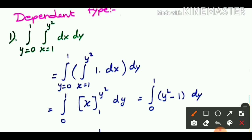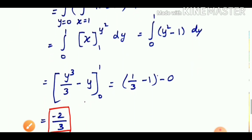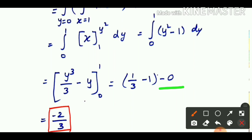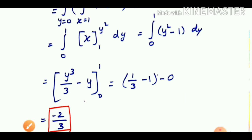We integrate y squared minus 1 with respect to y over 0 to 1. Integrating y squared gives y cubed by 3, and integrating 1 gives y. Substituting the upper limit 1: we get 1 by 3 minus 1. The lower limit gives 0. Solving, we get minus 2 by 3. That is the answer.